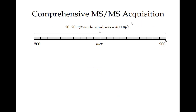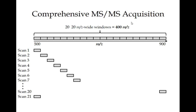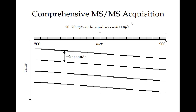This schematic shows traditional DIA methods. The first scan is an MS/MS scan measuring 500 to 520 m/z — isolating all precursors in that window and fragmenting them. The next scan jumps ahead by 20 m/z. These adjacent scans isolate and acquire, and the cycle continues until scan 20, then goes back. In this way, the entire range is covered. We try to make this entire process take about two seconds on our systems.